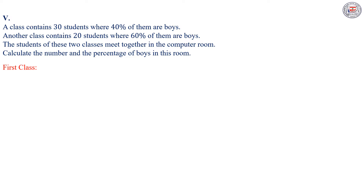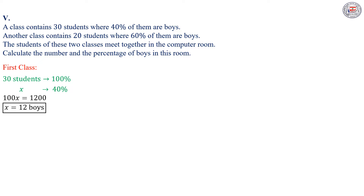In the first class, we have 30 students. They constitute 100% of the total number of students, and we have 40% of them are boys. Then the number of boys is x. We have a proportionality in this case. If we make a cross multiplication, then we get 100x equals 1200, then x equals 12 boys.